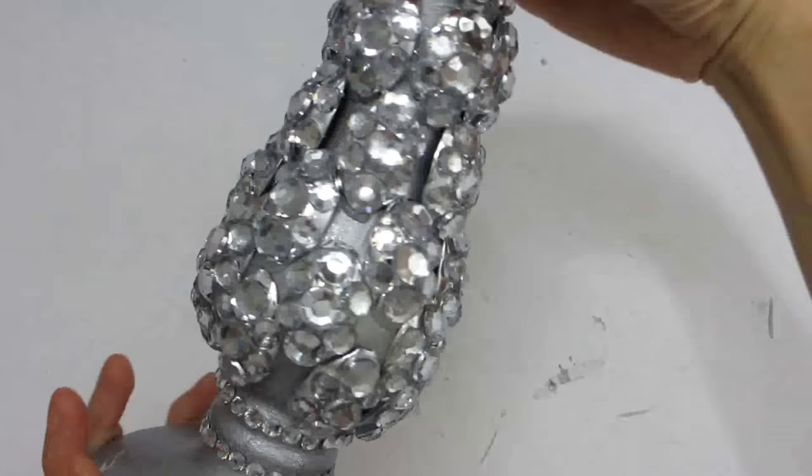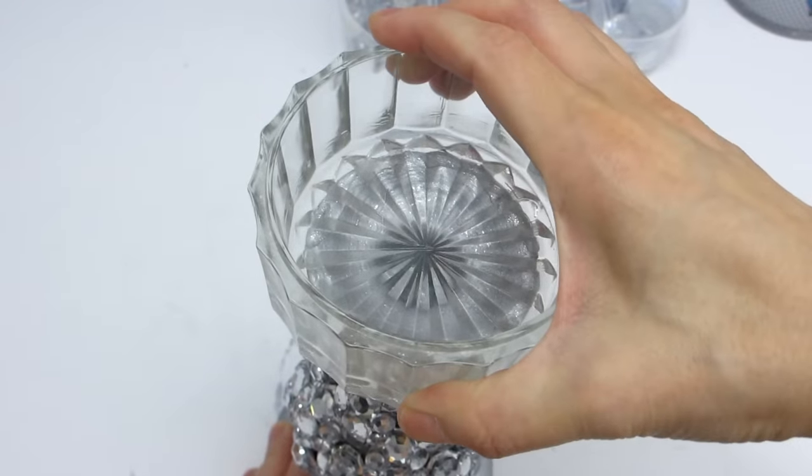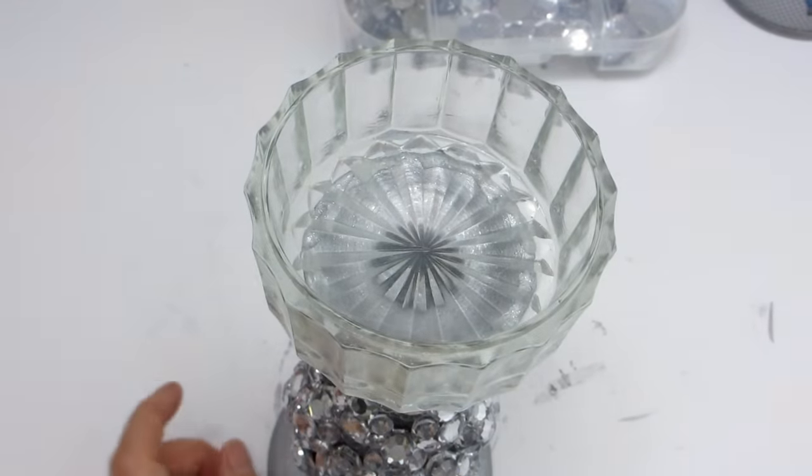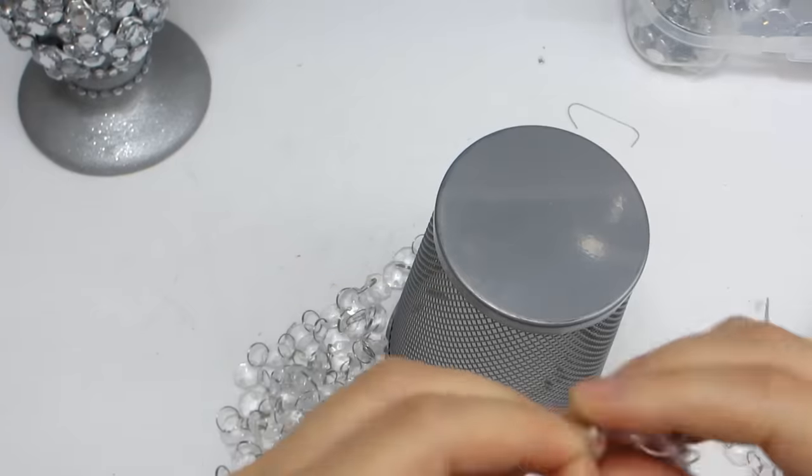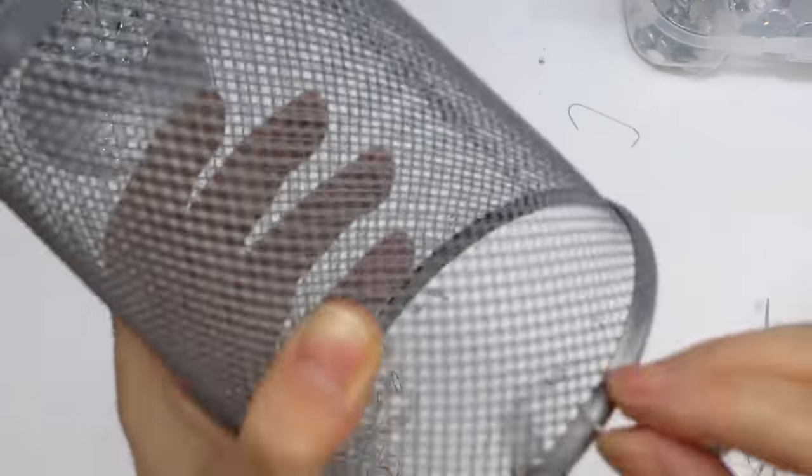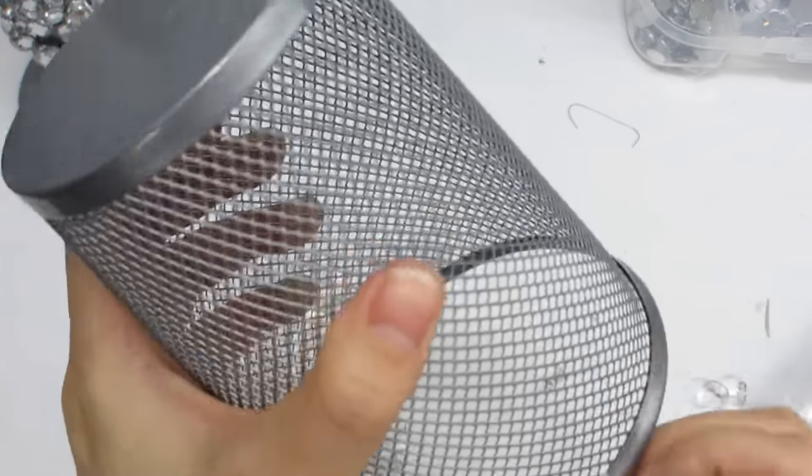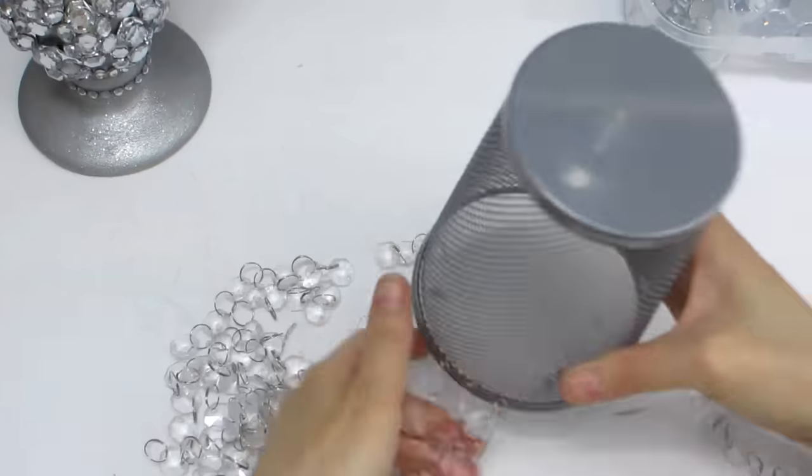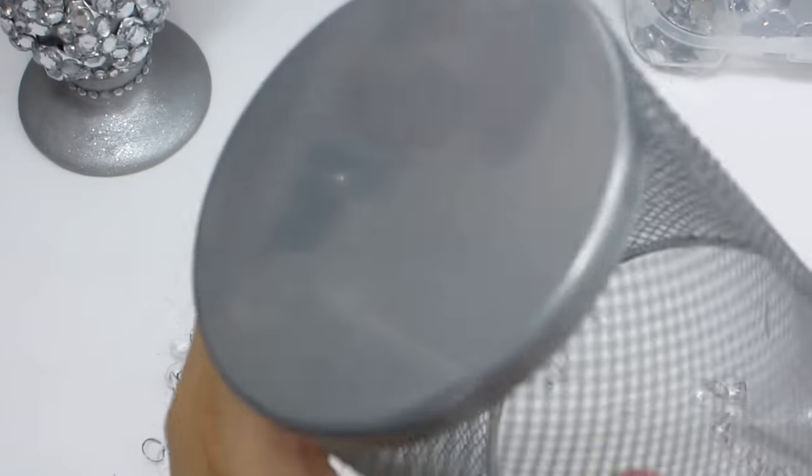And here's what the candle holder base looks like, fully embellished with the gems. On top of the candlestick holder, I'm placing a short glass bowl. And then I'm going to hang some short crystal garland strands all around the rim of the pencil holder. These crystal garland strands are attached by jump rings, so it's pretty easy to loop and hook the jump rings into the mesh holes of the pencil holder.